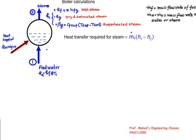Boiler calculations. In this one we have a drum here. We are supplying the feed water and we are getting the steam here.